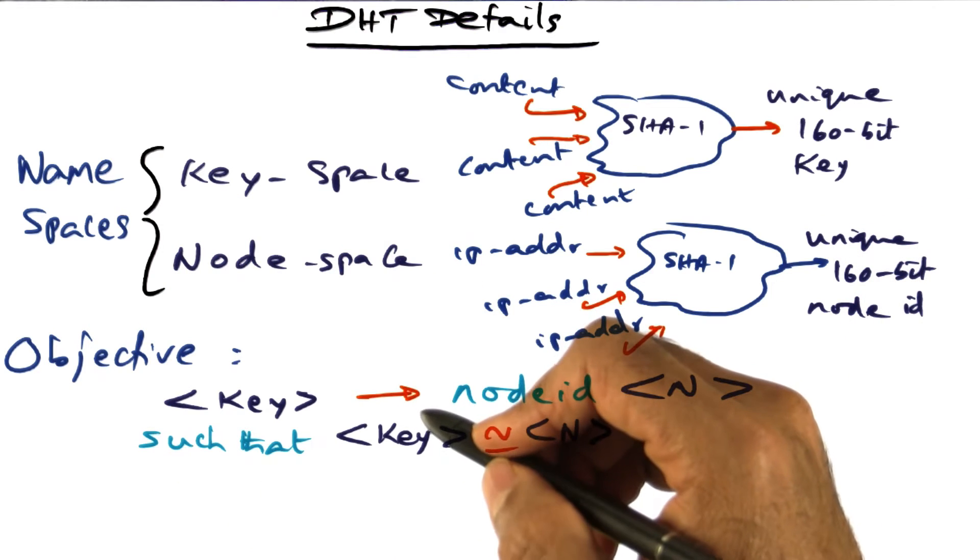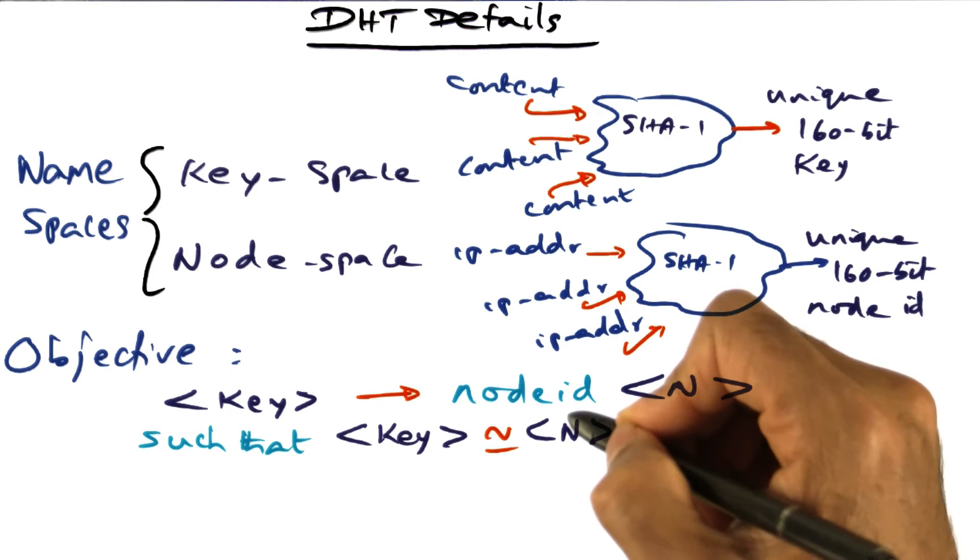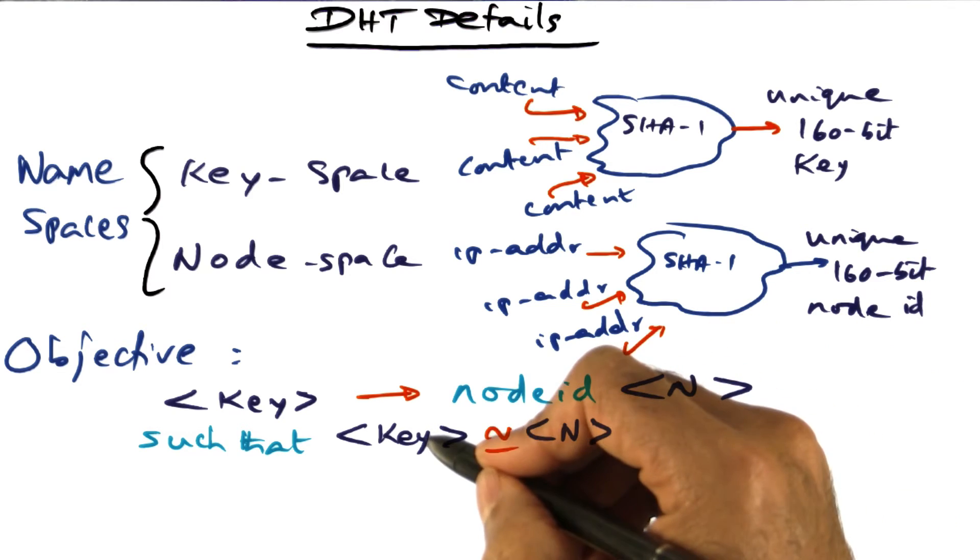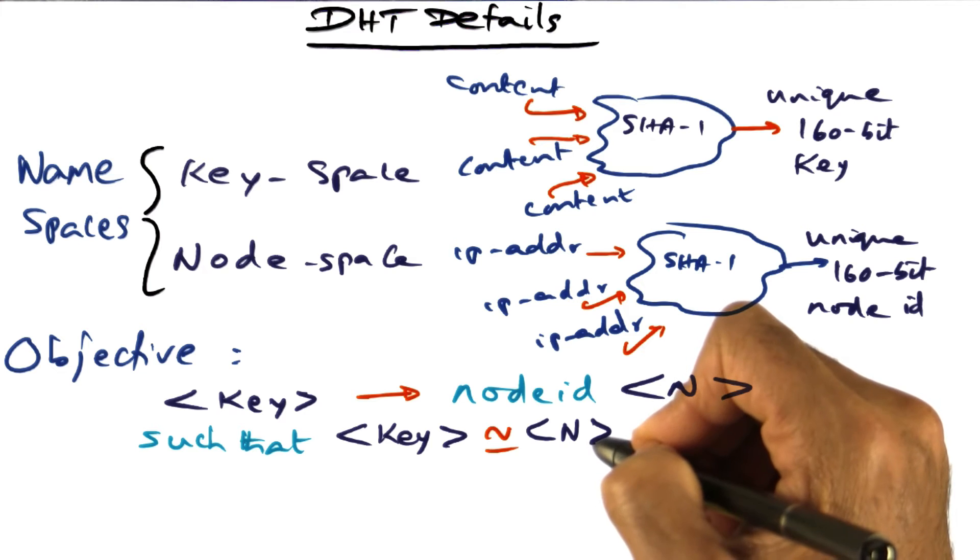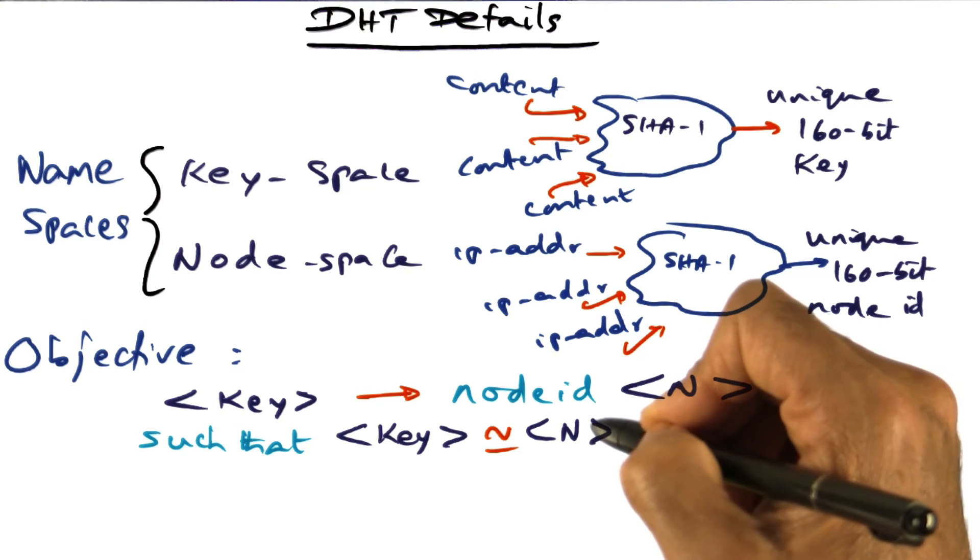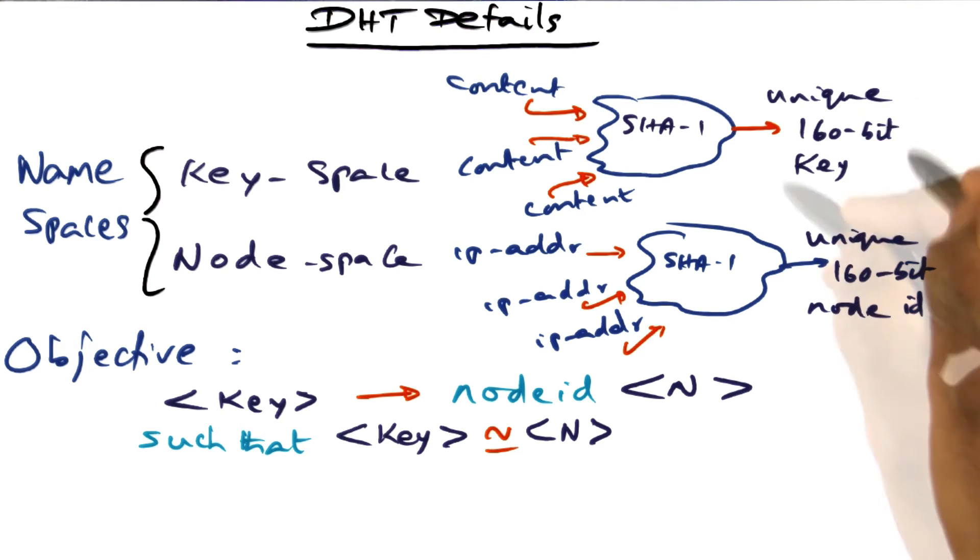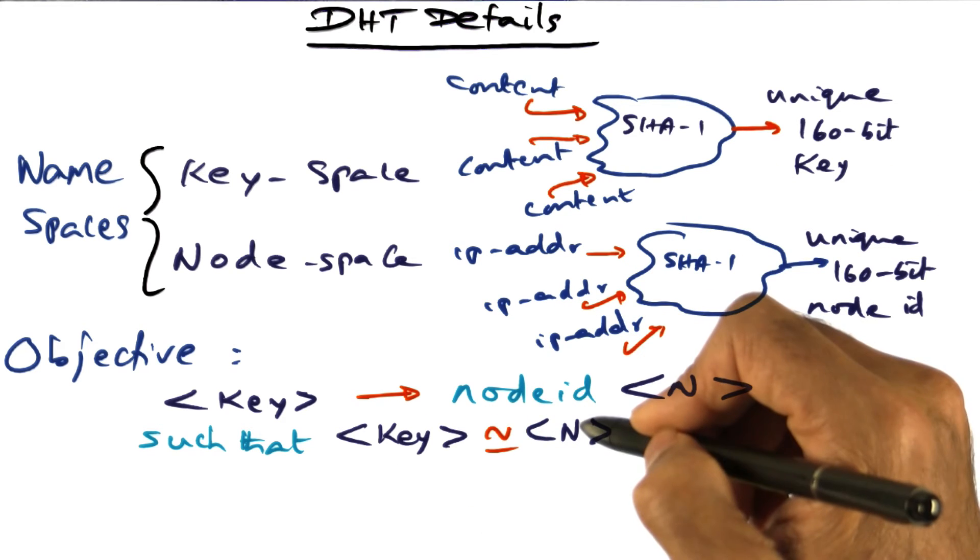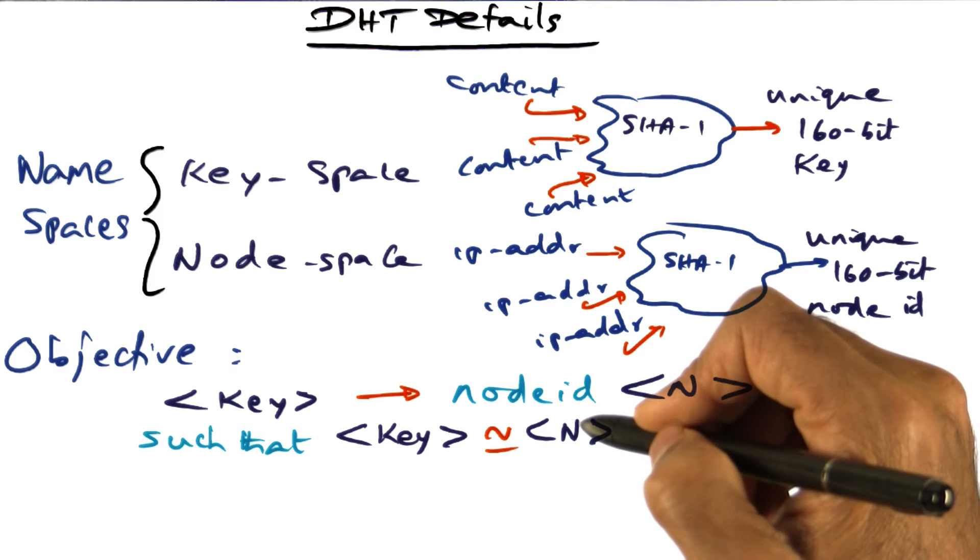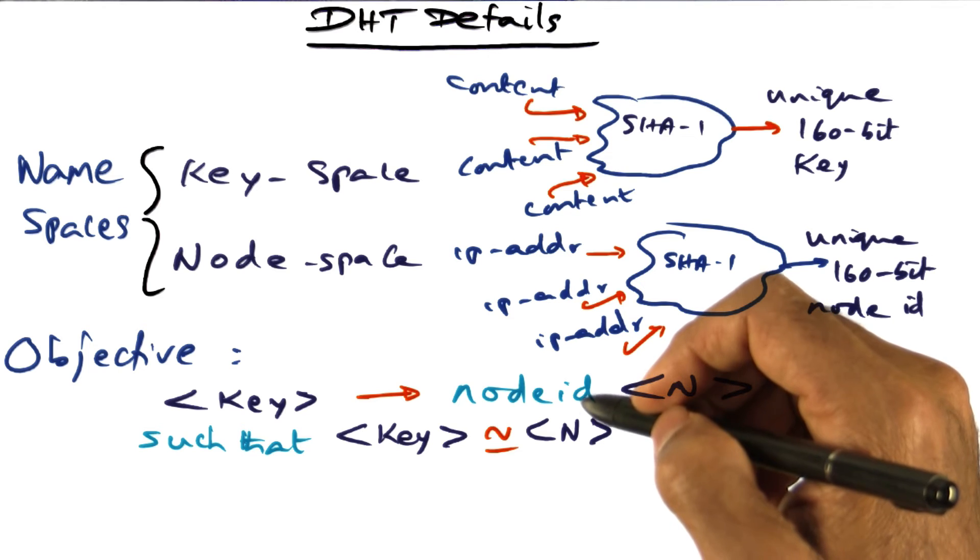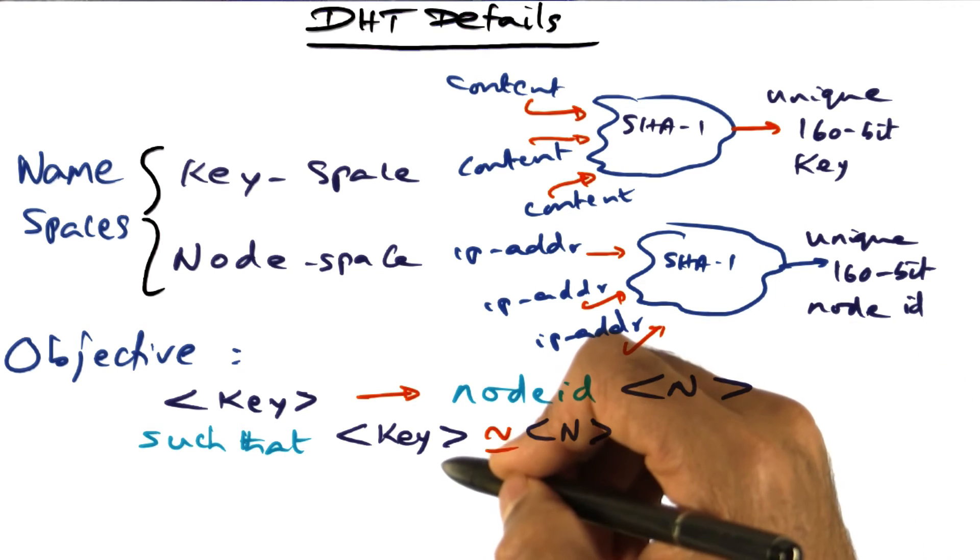The objective is if I have a key, I want to store that key in a node ID n such that the key is very close to the node ID n. Ideally, if you're lucky, the key is exactly equal to n, but it's not possible to guarantee that this hash and this hash will result in exactly the same value, so long as it is close enough. Like in the previous example, I showed you that if I generated a hash 149, I stored it in a node 150, which is close enough to the hash that I created.